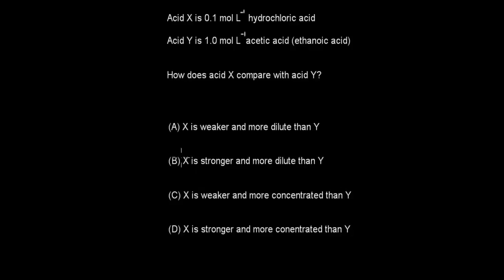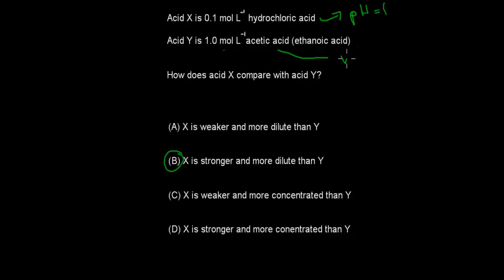Welcome back. The correct answer is B. Hydrochloric acid is a very strong acid. With 0.1 moles, pH = −log(0.1) = 1. Now, Y is more concentrated, which might suggest a lower pH, but acetic acid is a weak acid. Even though it has a higher concentration, it still produces fewer hydrogen ions in solution. So overall, X is stronger and more dilute than Y. B is correct.